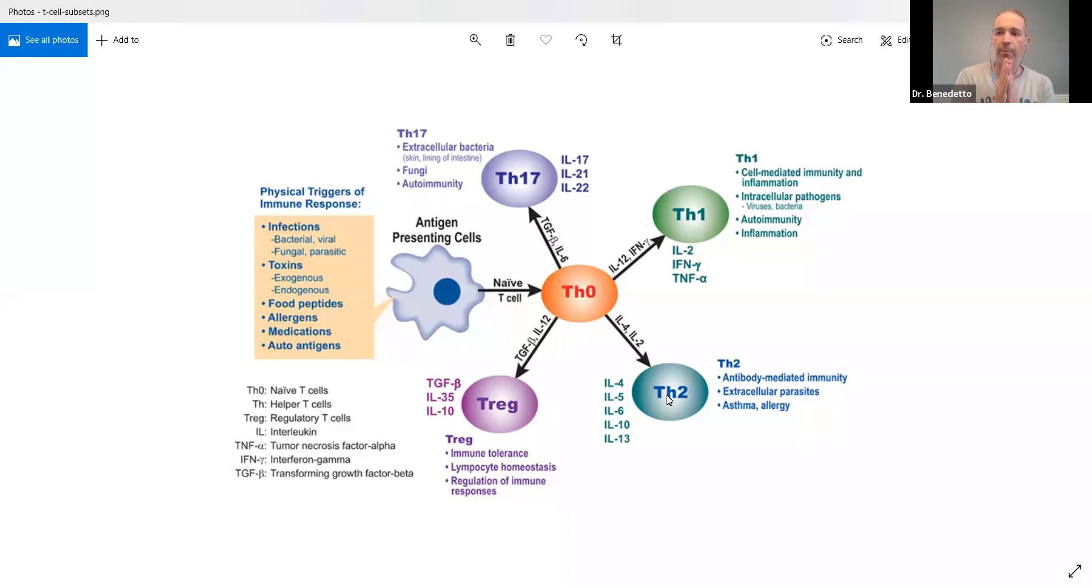Now, because what happens when we develop autoimmune disease is we get an imbalance between these two. So either the Th1 or the Th2 gets very dominant and kind of squashes the other one. So here's the deal. We get exposed to something, antigen-presenting cell takes it to the Th0, the king or the queen, and they say, okay, this is what we're going to do with it. And it's going to go Th1 or it's going to go Th2, depending on what inflammatory cytokines are present at the same time. Because there's a reaction now that takes place.